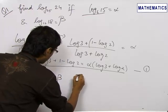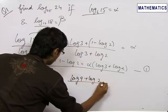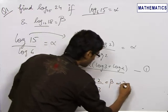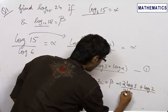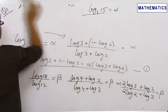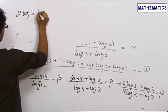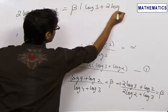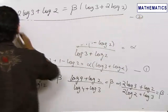For log 18 upon log 12 equals beta, we write this as (log 9 + log 2) upon (log 4 + log 3), which simplifies to (2 log 3 + log 2) upon (2 log 2 + log 3) equals beta. Cross multiplying gives us our second equation: 2 log 3 + log 2 equals beta times (2 log 2 + log 3).